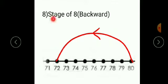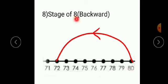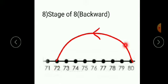Next is stage 8 backward. There is a number line from 71 to 80. As it is a backward stage, start from the last number — 80. Consider that you are at position 80. As it is stage of 8, move 8 steps back: 1, 2, 3, 4, 5, 6, 7, 8. You will reach 72. Draw a curve and use the backward arrow to represent the backward stage.